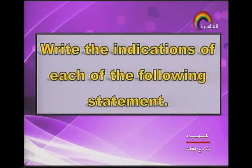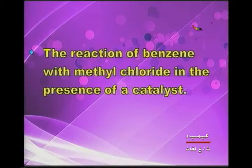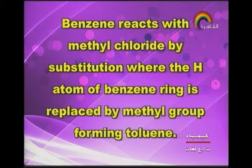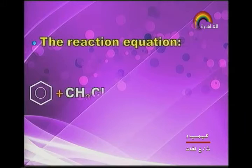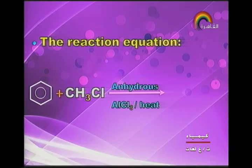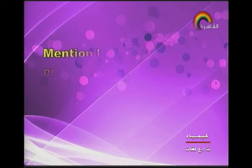Next type of question: write the indication of each statement. The reaction of benzene with methyl chloride in the presence of catalyst — benzene reacts with methyl chloride by substitution reaction where the hydrogen atom of the benzene ring is replaced by a methyl group, forming toluene. The equation: benzene reacts with methyl chloride in the presence of anhydrous aluminum chloride and heat, giving toluene and releasing hydrogen chloride gas.